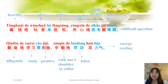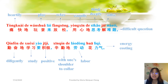勤奋地学习要积极, 心情地劳动花力气. 勤奋地 and 心情地 both mean 'work hard'. 学习 means 'study', 积极 means 'positively', 劳动 means 'labor', 花 means 'to spend', 力气 means 'energy'. So 土也得 follows a verb, while 白勺的 precedes a noun.